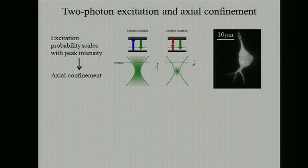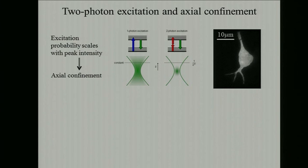The technique of choice to deal with axial confinement is two-photon photoactivation. In two-photon photoactivation, you absorb two near-infrared photons simultaneously to generate the excitation of channelrhodopsin. Because the excitation probability scales with peak intensity rather than average intensity, this leads to axial confinement.